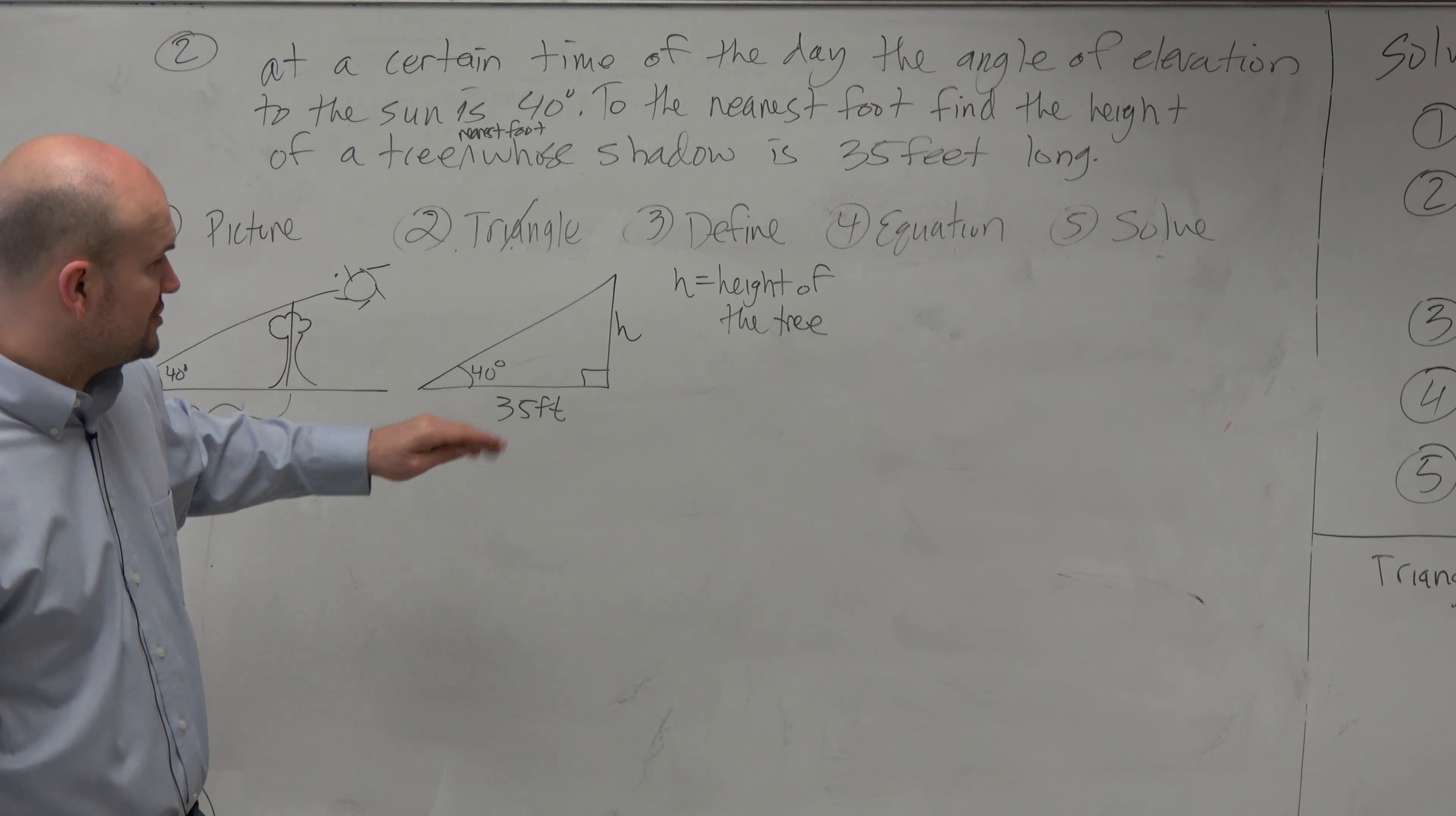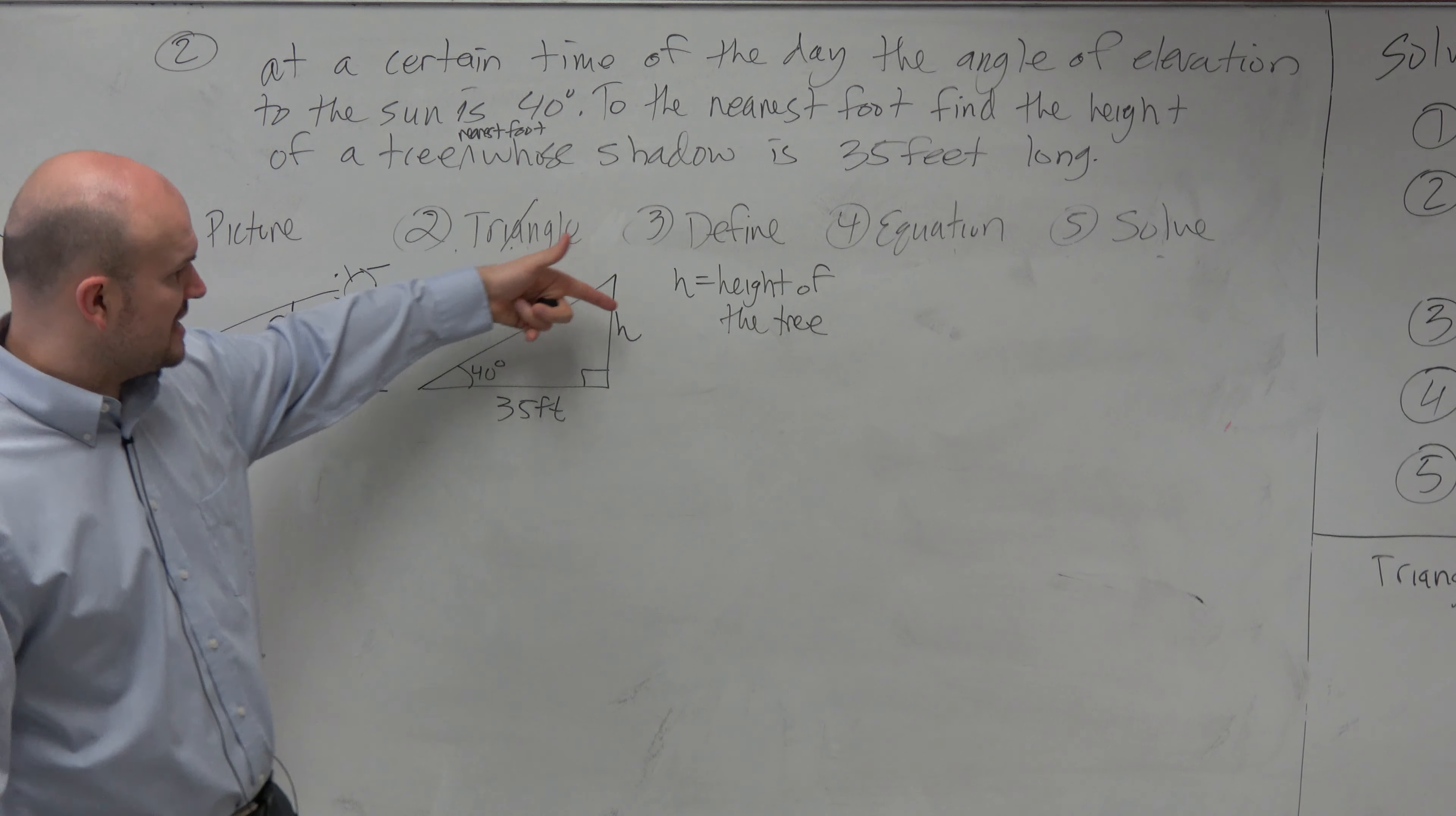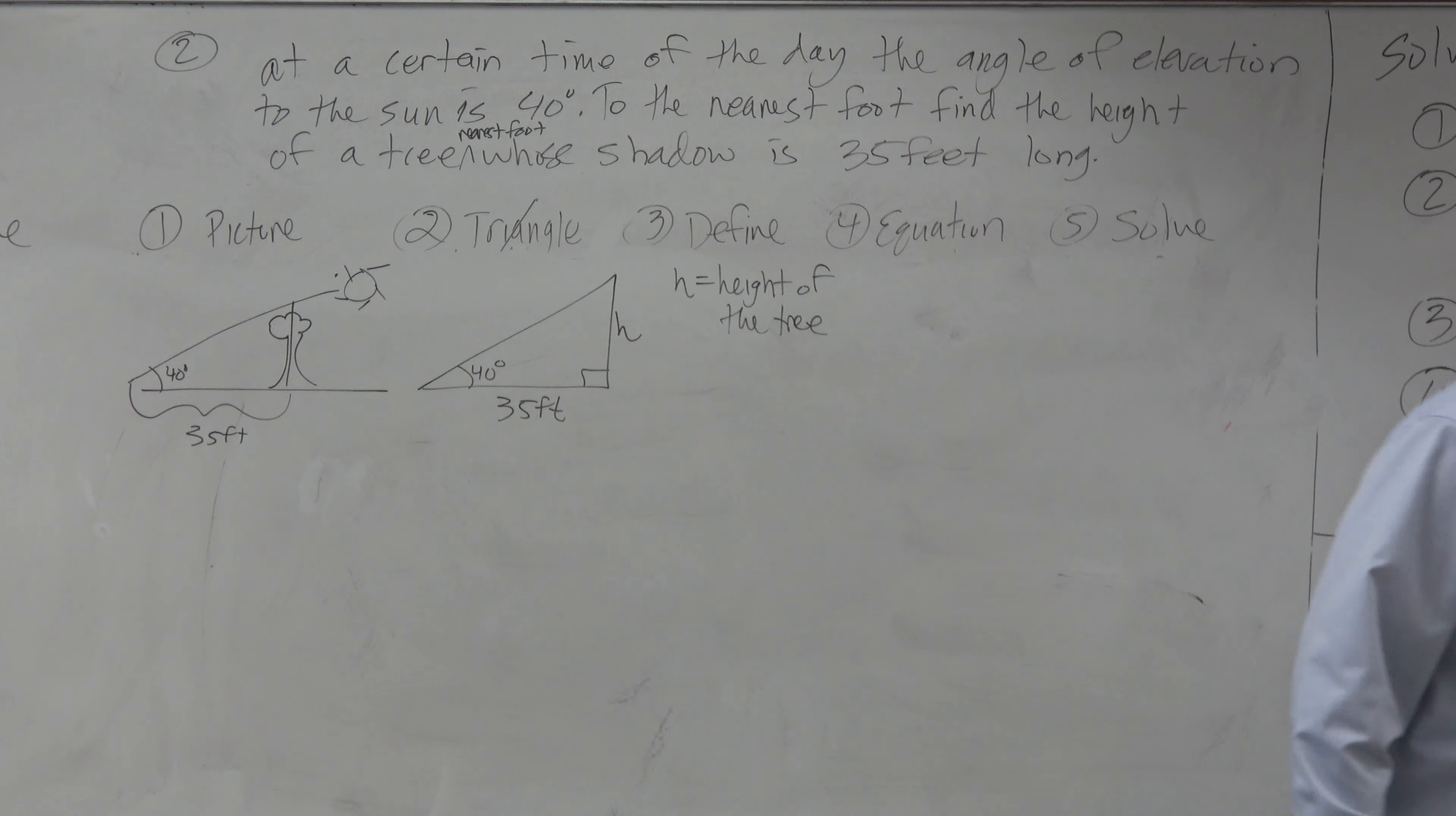And now I need to set up an equation. So based on this equation, if I need to solve for h, I look at the sides that I have. It's a right triangle. And you can see I have the opposite and the adjacent side. And I have the angle. So therefore, the trigonometric ratio that I'd want to use would be tangent.